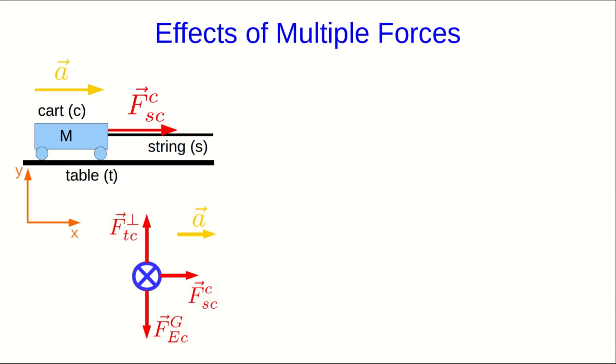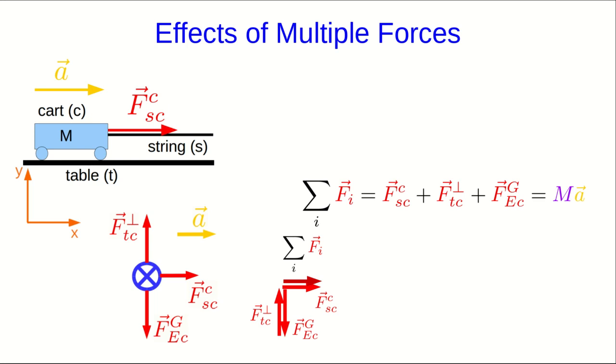Now the vector addition of these has to add up to a vector sum of forces pointing to the right, because that is the direction that the acceleration points. And so the vector sum has to look something like this so that we get a vector sum that points straight to the right. Writing it out, it looks like this, but what you can see looking at the diagram of the vector sum is that the perpendicular force due to the table and the gravitational force due to the earth must cancel out. And so I'm just going to drop them out.